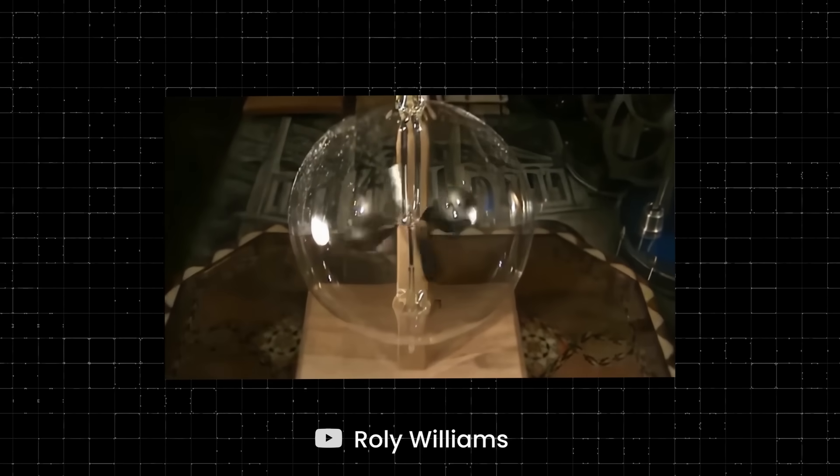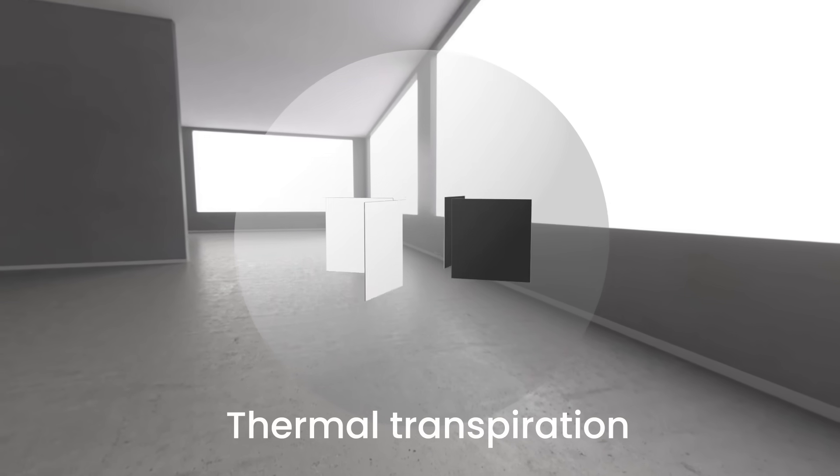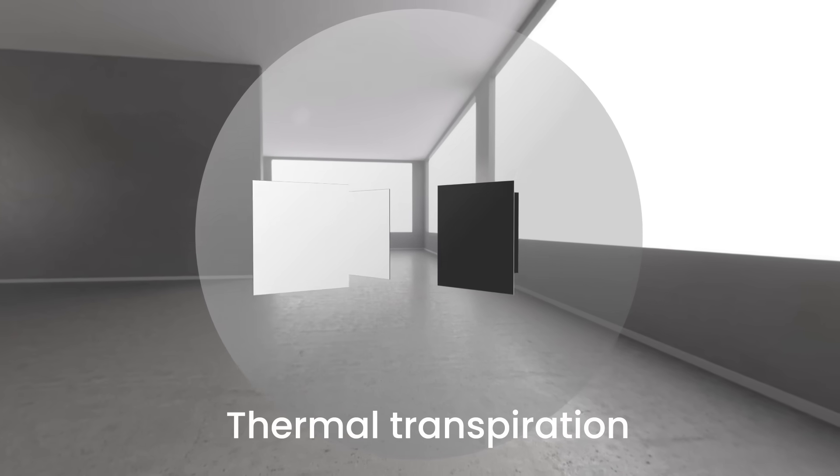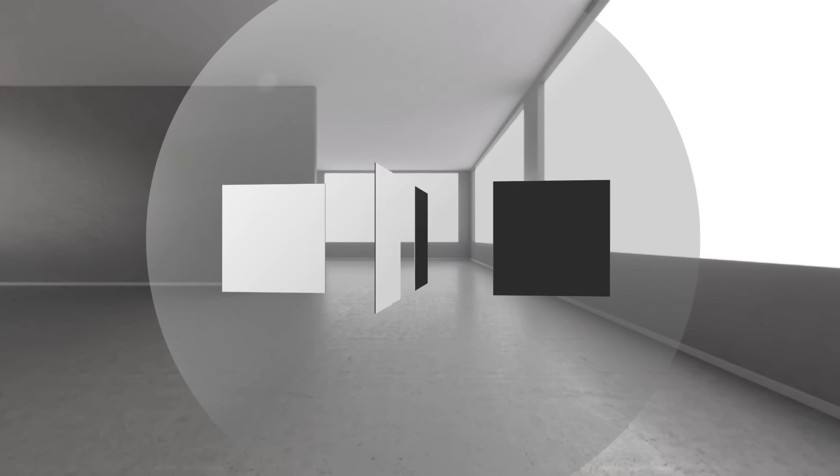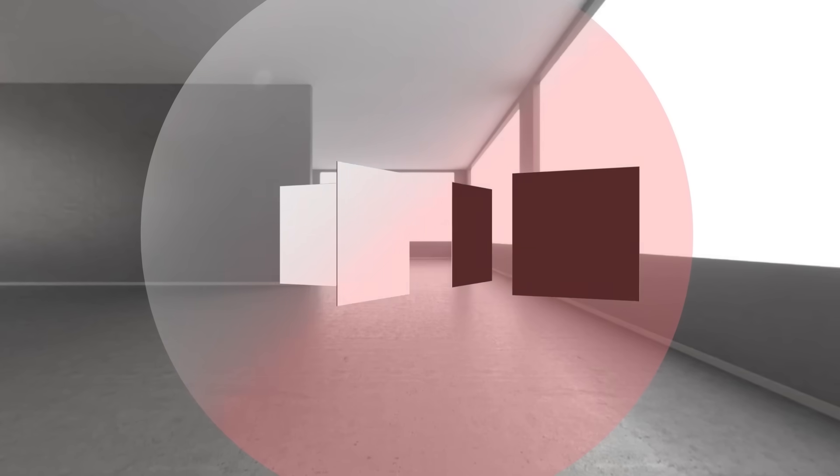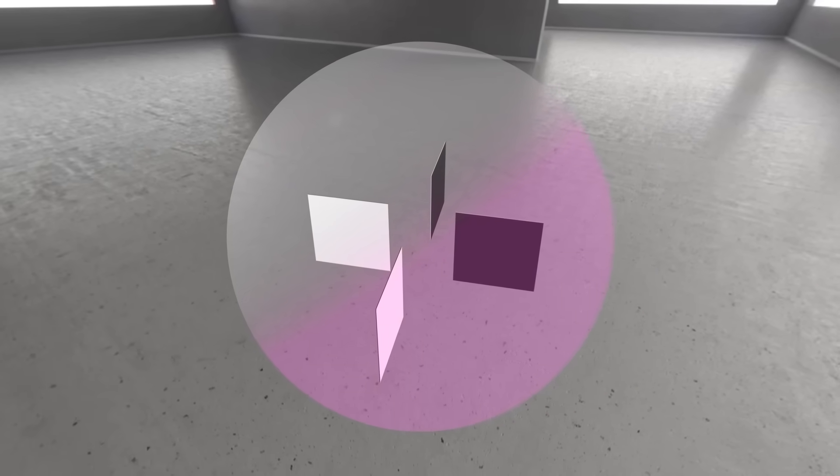However, the real reason that the vanes in Crookes radiometer spin is something called thermal transpiration. So what actually happens is when you shine a light on the bulb, the glass heats up and emits invisible infrared radiation, and the black side of the square vanes picks up more radiation than the white side, and thermal transpiration causes the vanes to spin.